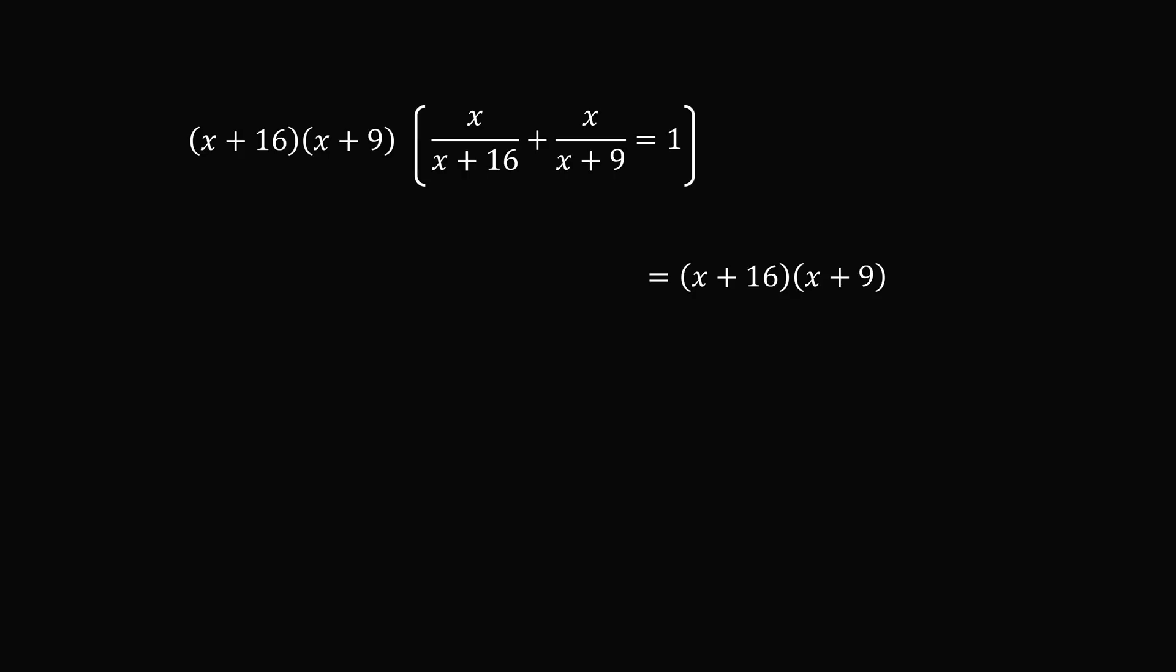To simplify the left-hand side of the equation, we need to distribute. So we'll first do this multiplication. So the denominator x plus 16 will cancel out with the factor x plus 16, leaving x multiplied by x plus nine.